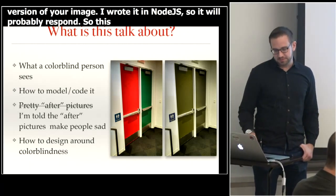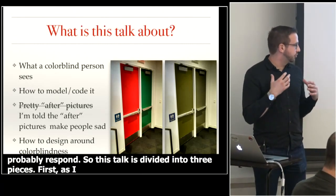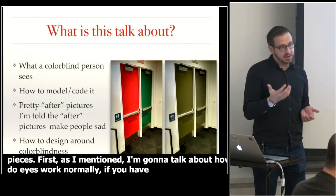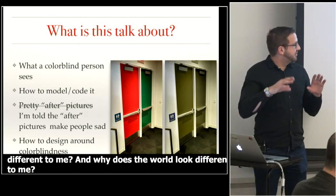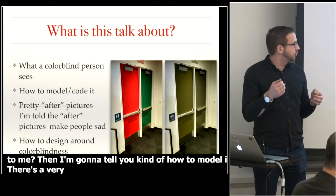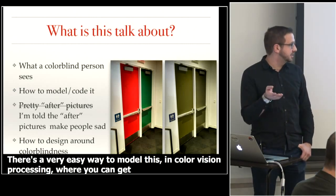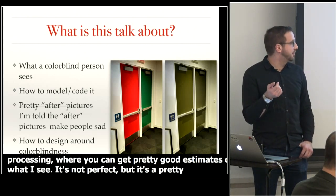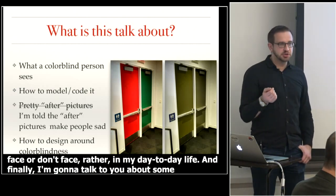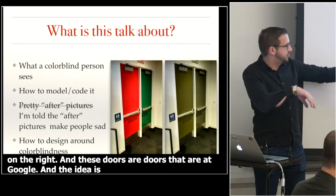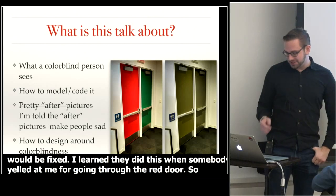The talk is divided into three pieces. First, I'll talk through how eyes work normally with full color vision. Then — I'm red-blind — how does the world look different to me, and why? Then I'll tell you how to model it. There's an easy way to model this in color vision processing to get pretty good estimates of what I see. Finally, I'll talk about some simple techniques you can apply to avoid issues. As a motivating example, there are cafeteria doors that were fixed simply by coloring one of them — a problem based purely on color.